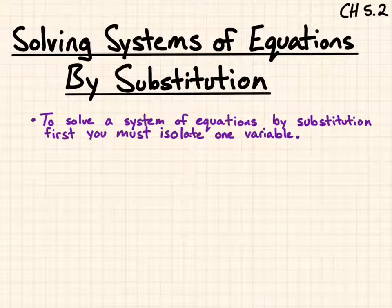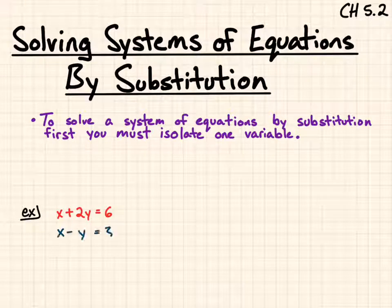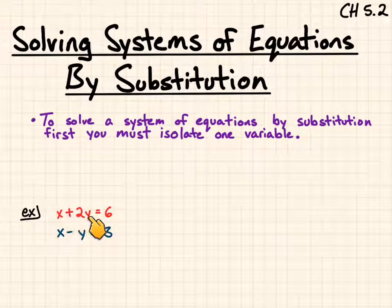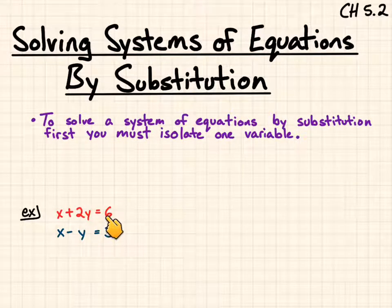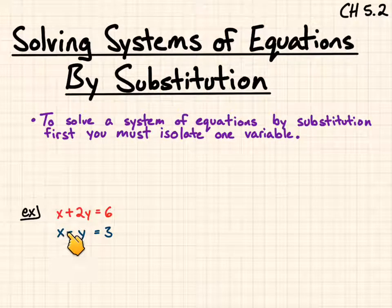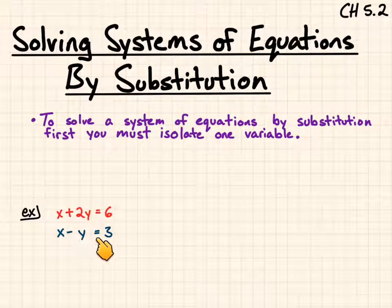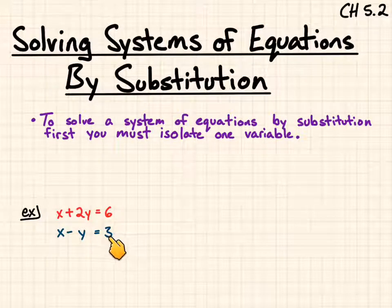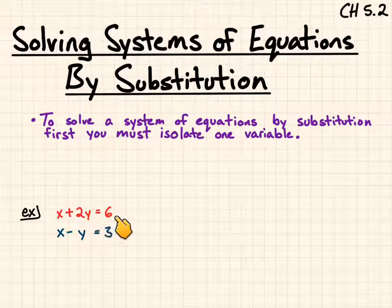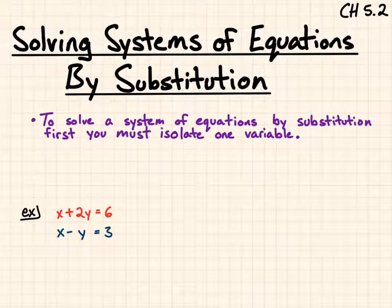We're going to try the example where the first equation is x plus 2y equals 6, and the second equation is x minus y equals 3. This is two equations, so it's a system of equations.